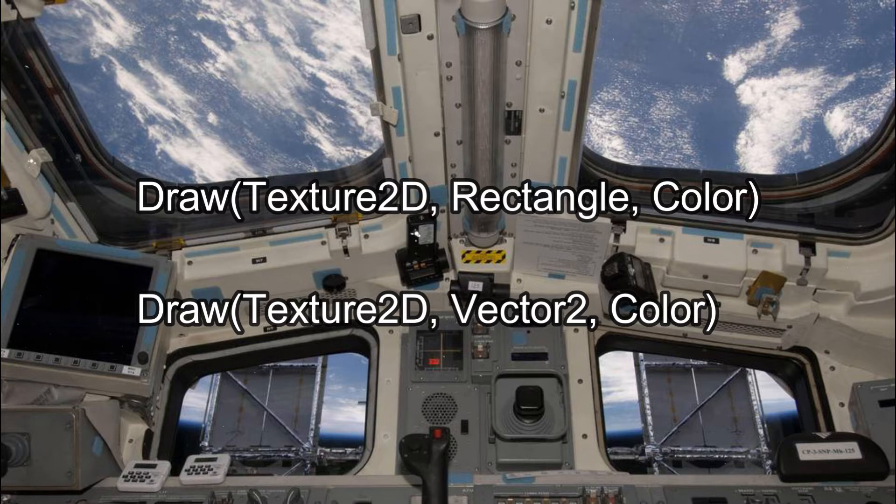The main difference is that the vector 2 position makes the width and height of the image you are drawing the same as the texture you are using, while the rectangle version you can change the size to whatever you choose.